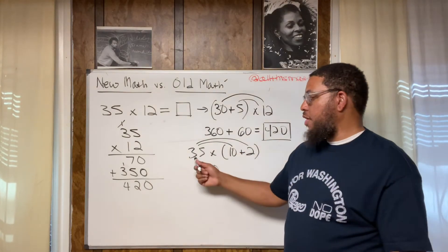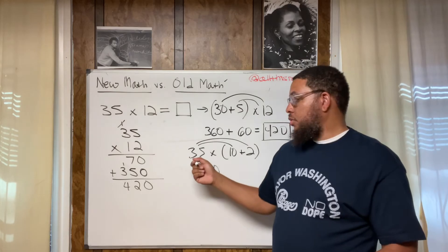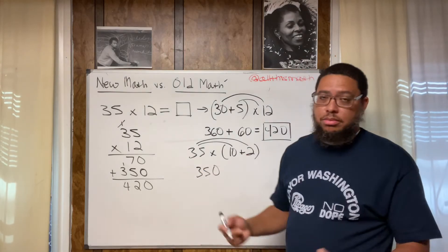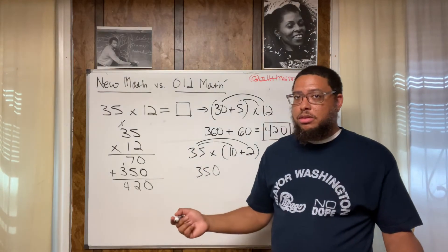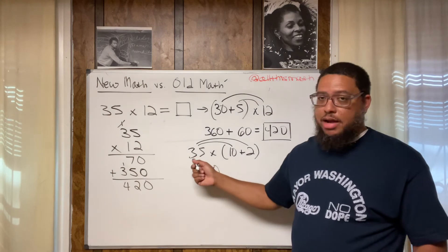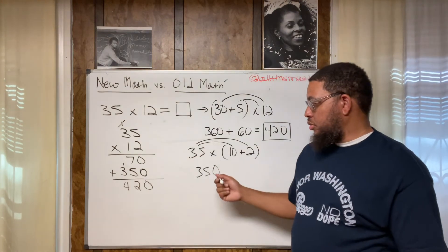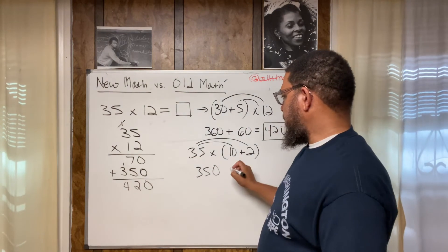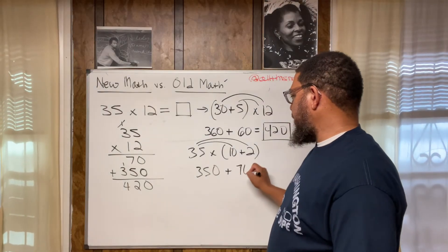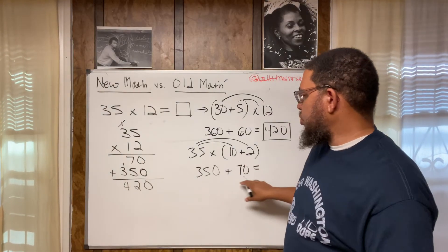Or think about it if it was 3.5 or $3.50. What's $3.50 times two? Seven. $7. So 35, 3.5 times two is seven. 35 times two is going to be 70. So now we got 35 times two, that's going to be 70.